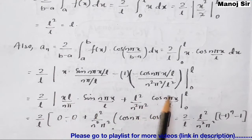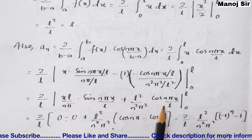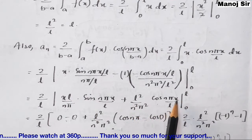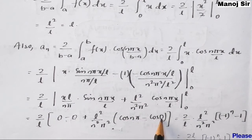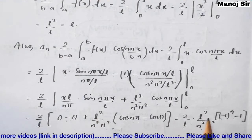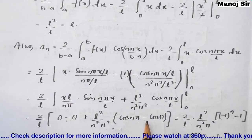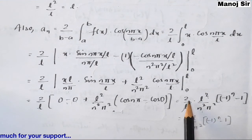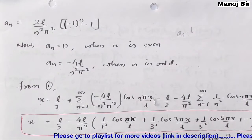For the second term, we have (2/l) · (l²/(n²π²)) · [cos(nπx/l)] from 0 to l. Putting in the upper limit gives cos(nπ) = (−1)ⁿ, and the lower limit gives cos(0) = 1. So the expression becomes (2/l) · (l²/(n²π²)) · [(−1)ⁿ − 1]. After cancelling l, we get aₙ = (2l/(n²π²)) · [(−1)ⁿ − 1].